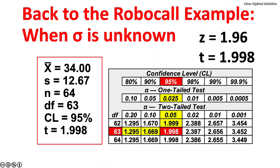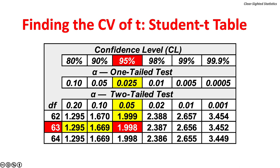Finding the critical value of T using the Student t table is straightforward. First, find the appropriate column — there are three: one for confidence intervals, one for one-tailed tests, and one for two-tailed tests. Select the column for confidence intervals matching the selected confidence level. The second step is to find the degrees of freedom row. Degrees of freedom is the total number of observations minus 1 — in this case, n of 64 minus 1, which is 63. The critical value is found at the intersection of the column and row. The critical value for a 95% confidence level with 63 degrees of freedom is 1.998.